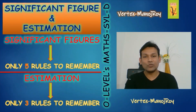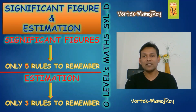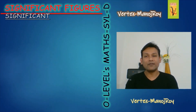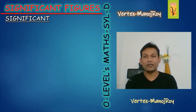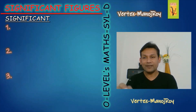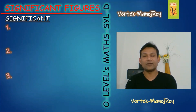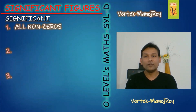By understanding these rules, you will be able to understand the whole topic of significant figures and estimation. Starting with significant figures, I have divided into three categories — three cases. These are the numbers that are 100% significant. All non-zeros are significant. What do you mean by all non-zeros?